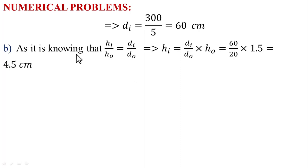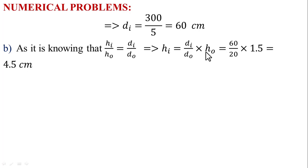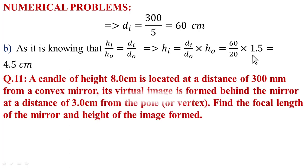Now for part B, using the magnification formula: Hᵢ/H₀ = Dᵢ/D₀. This implies Hᵢ = (Dᵢ/D₀) × H₀. Putting in the values: Hᵢ = (60/20) × 1.5. So the height of the image is 4.5 cm.